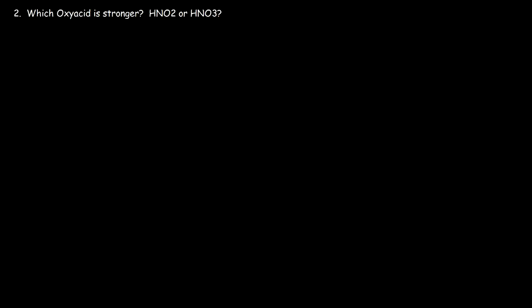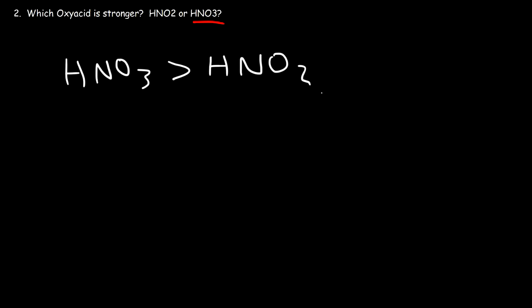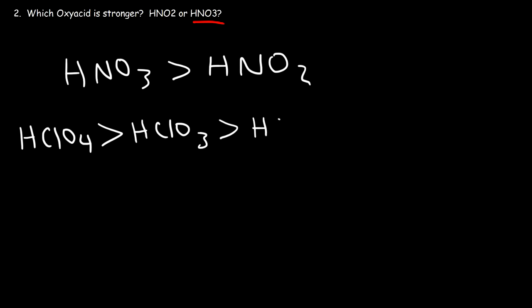Number 2: which oxyacid is stronger — HNO2 or HNO3? The answer is HNO3. HNO3 is stronger than HNO2; it has a higher Ka value. For oxyacids, the acid with the greater number of oxygens is typically the stronger acid. For example, HClO4 is a stronger acid than HClO3, and HClO3 is stronger than HClO2, and HClO2 is stronger than HClO.